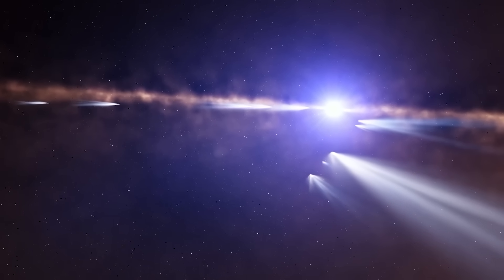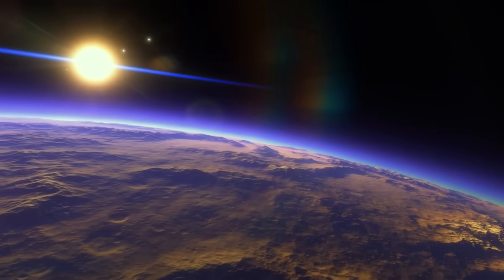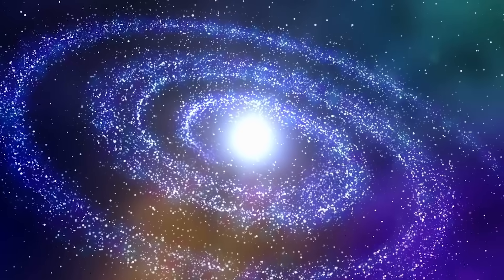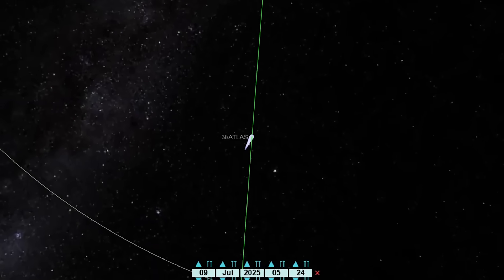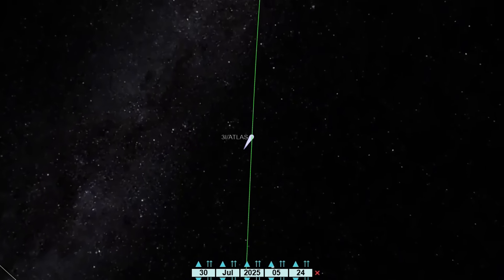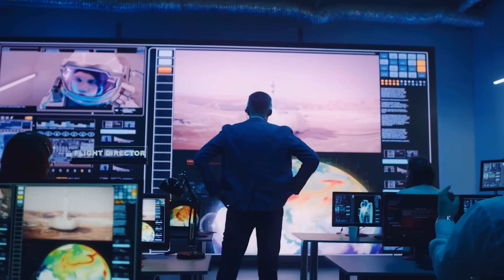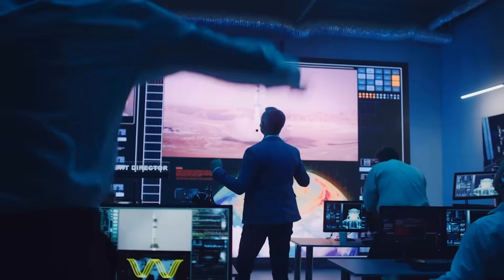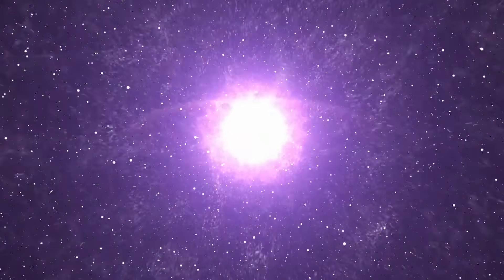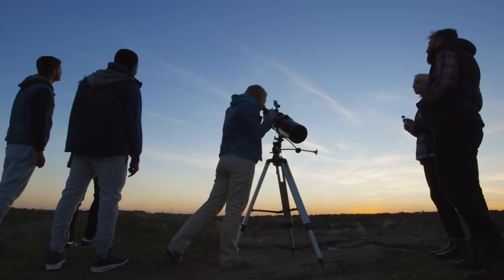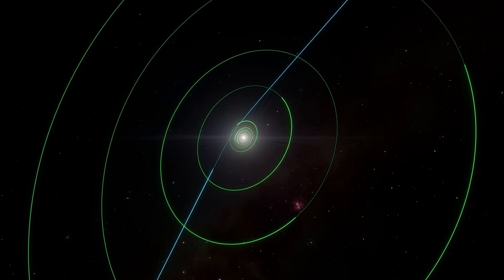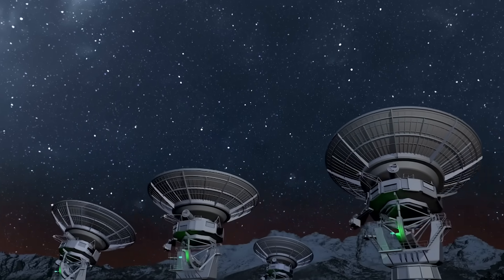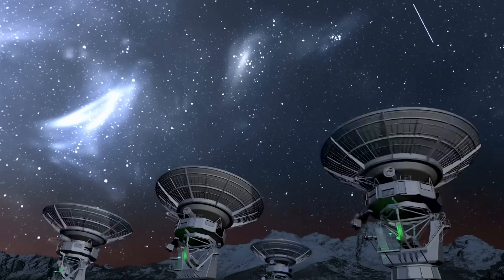One of the most intriguing aspects of 3I Atlas's approach is how it might interact with the sun's magnetic field. The solar corona is a region of intense magnetic turbulence, and as the object penetrates deeper, its ionized gases will become entangled in this web of forces. Scientists expect to witness magnetic reconnection events that could release massive bursts of radiation. These bursts may manifest as bright X-ray flashes or radio waves detectable across interplanetary space. For astrophysicists, such data are invaluable, providing real-time evidence of how plasma behaves under extreme conditions. It could even refine our models of stellar accretion and magnetic behavior in other stars, linking small-scale solar physics with large-scale galactic dynamics.